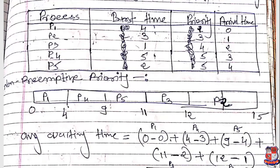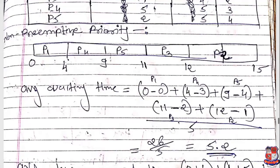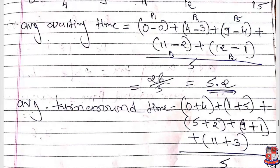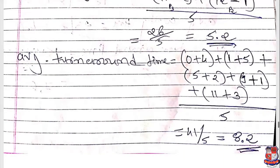We now find waiting time and turnaround time. The waiting time equation is: waiting time equals starting time of process minus arrival time. For P1: starting time 0 minus arrival time 0. For P4: starting time 4 minus arrival time of P4, which is 3. We apply this equation to all processes to get each waiting time. For turnaround time: waiting time plus burst time for all processes, then divide by number of processes to get the average turnaround time.